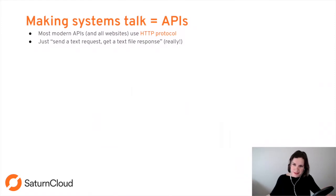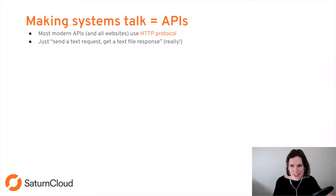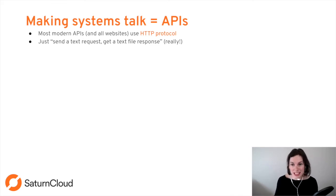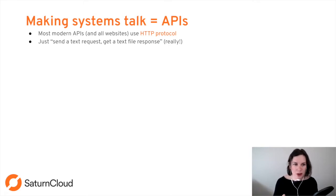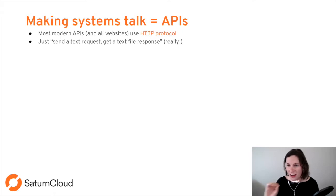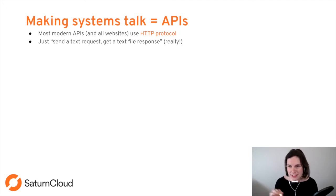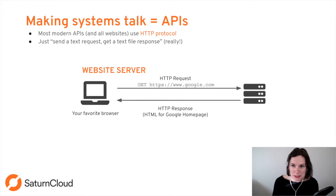How do you make computer systems talk? If a software engineer is developing the Netflix UI and wants to put in recommendations, we need one UI system to talk to the recommendation system — and to do that, we use APIs. Most modern APIs use the HTTP protocol. This blew my mind — I did not realize this for like the first 10 years of my career. Websites also use the HTTP protocol.